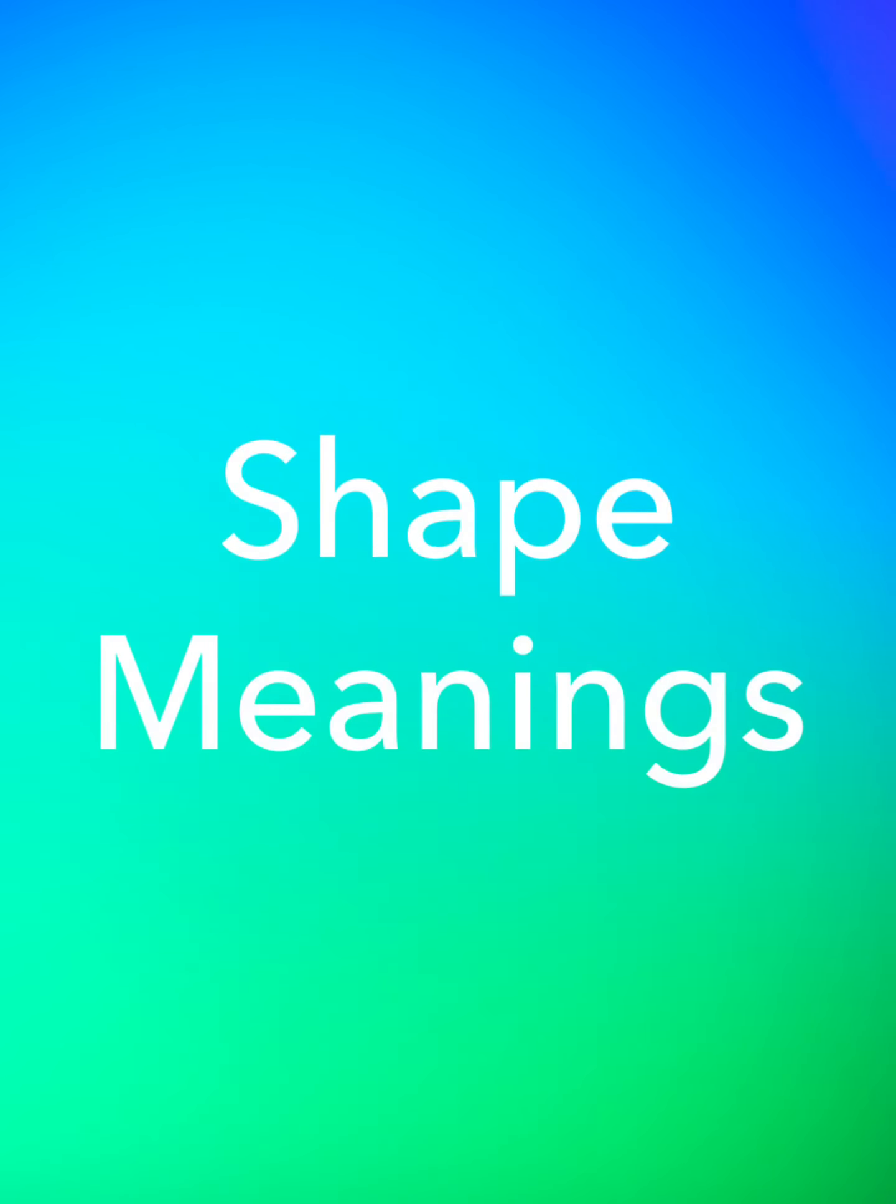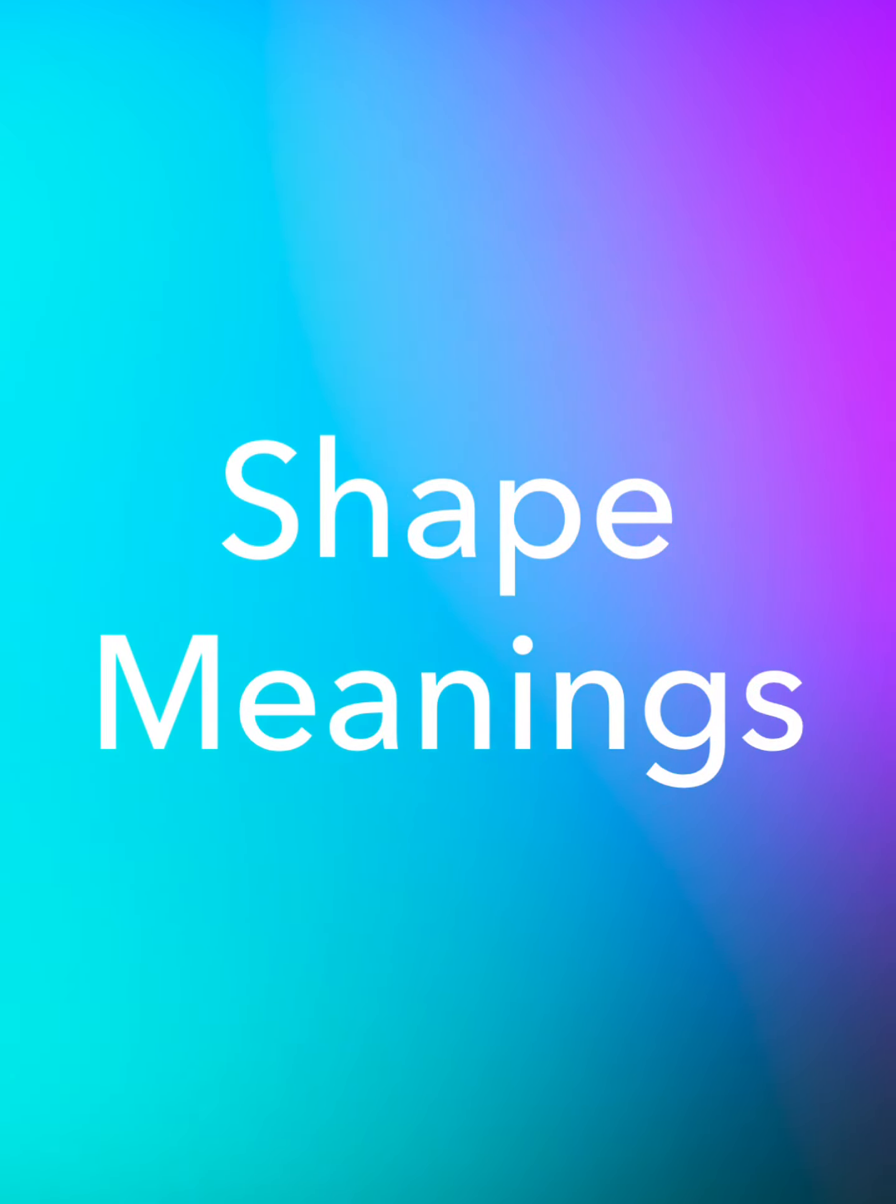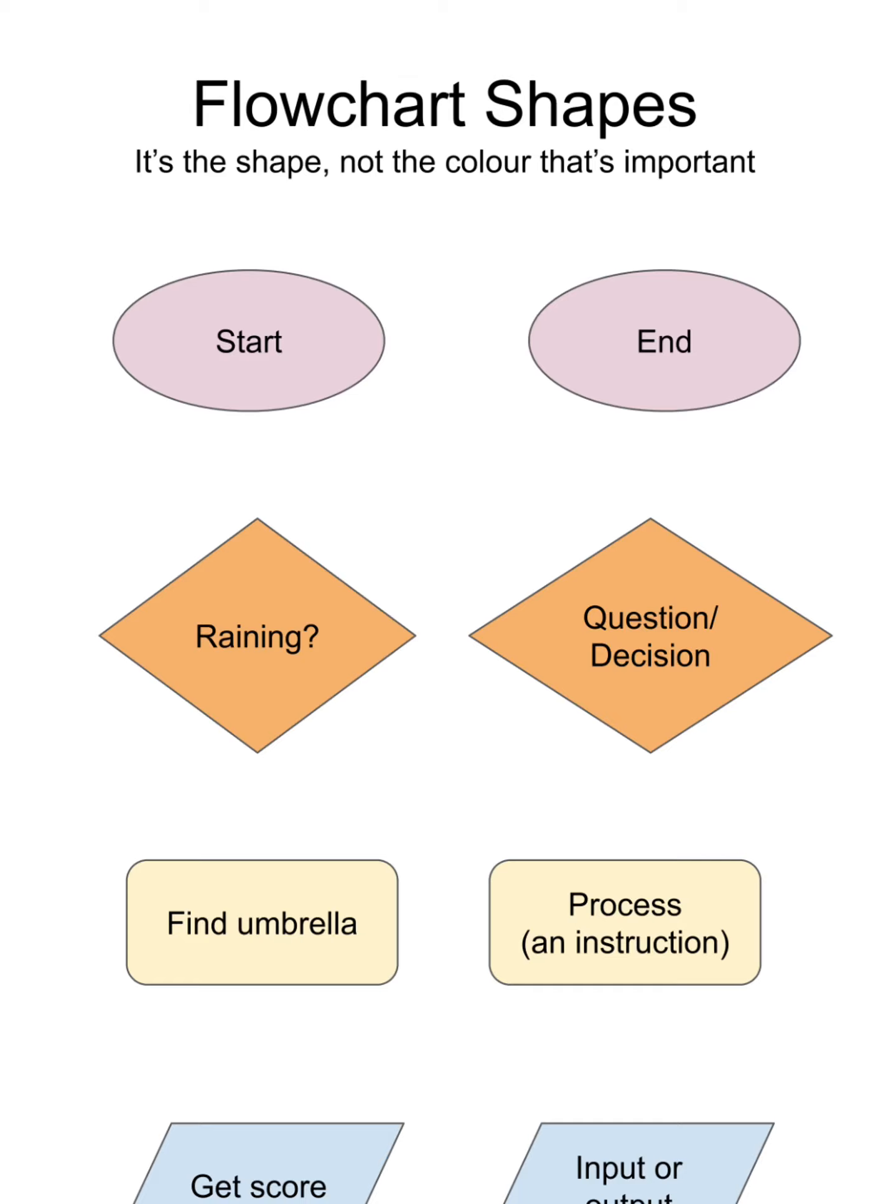You may have noticed that each of the parts of the flowchart had a different shape. Here's what they mean. So it's the shapes rather than the colour that are important. At the top you can see the oval shapes. These signify the start and the end of the flowchart or the start and the end of the algorithm. Then you've got the diamonds. They are representing questions or decisions. You will find it easier if you think about these as questions such as is it raining? Have I found the umbrella?